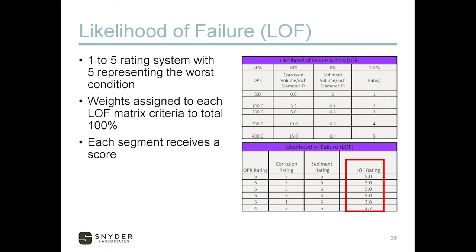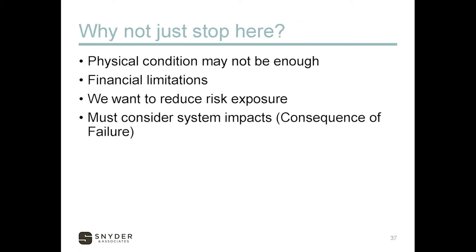We take the raw data and assign a weighting criteria up to 100% based on our highest priority. In this case, the overall pipe rating was 70% of the criteria, and the corrosion volume — how much pipe wall loss there'd been — was 30%. The client didn't have much concern with sediment volume, so it was assigned zero. This is fully customizable. We could just stop at physical condition — those would be your worst pipes with the highest likelihood of failure. However, with financial limitations and pipes of equal likelihood of failure, you need to know which one to pick. That's where risk exposure comes in.